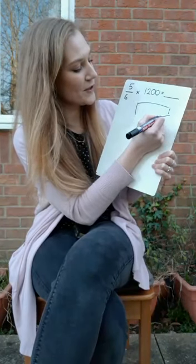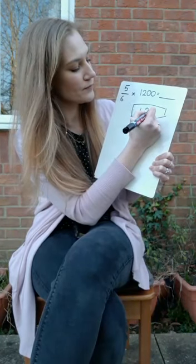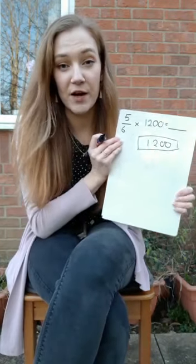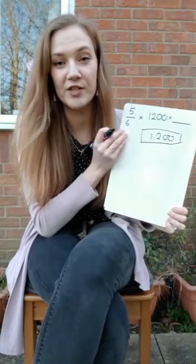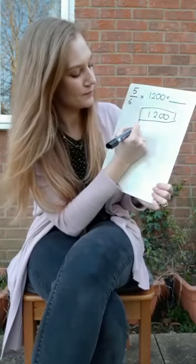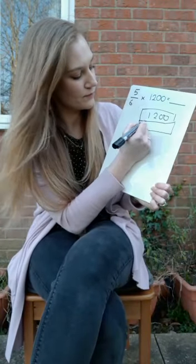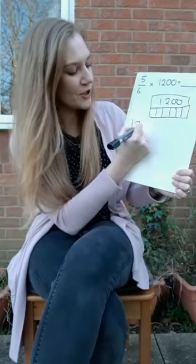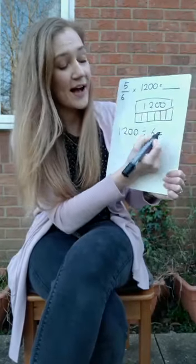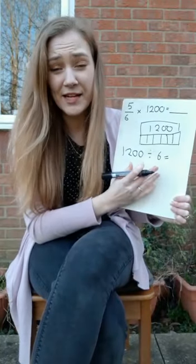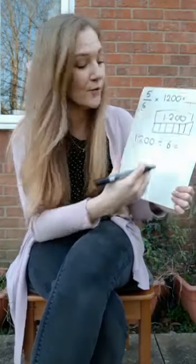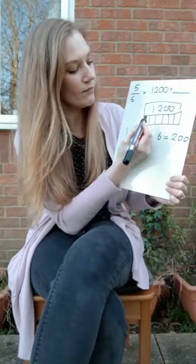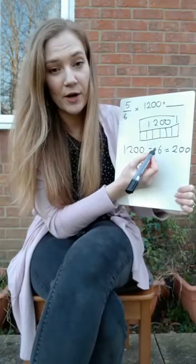So I've got my whole 1,200. The first thing I'm going to do is find out what one of those sixths is worth, and I'm going to divide 1,200 into six equal pieces. So I'm going to do 1,200 divided by six, and if I know my six times tables and the relationship between six and twelve, I know that it's just 100 times bigger, so it's going to be 200. So each of these sixths are now worth 200.